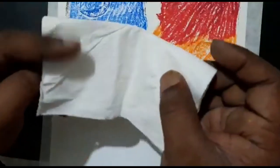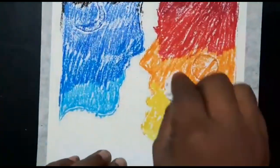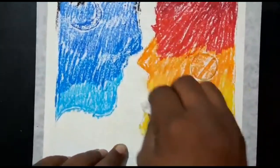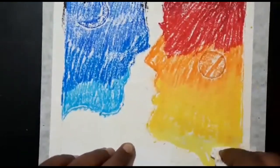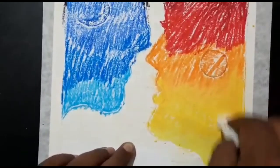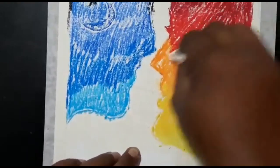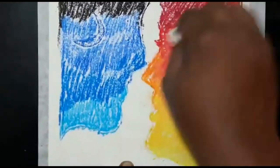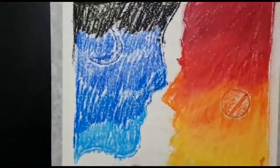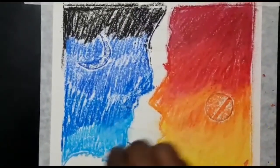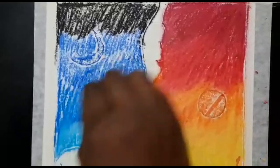So now the picture is done. Now I'm taking the tissue paper to just merge it. So just you need to rub on the colors. It will merge automatically. Change the tissue paper and do the other side.